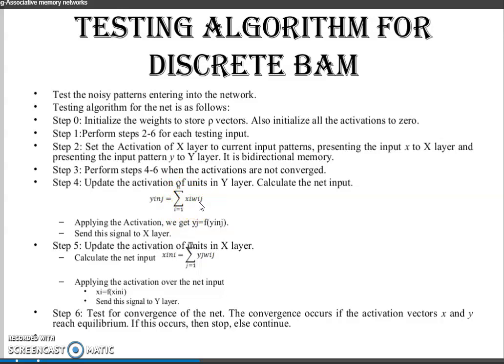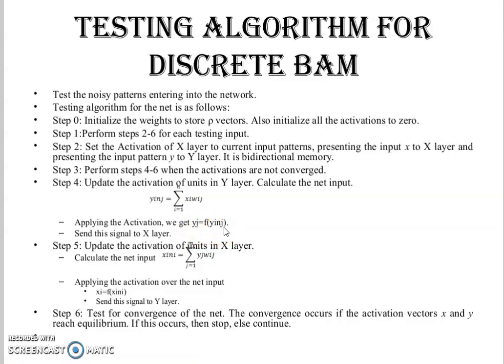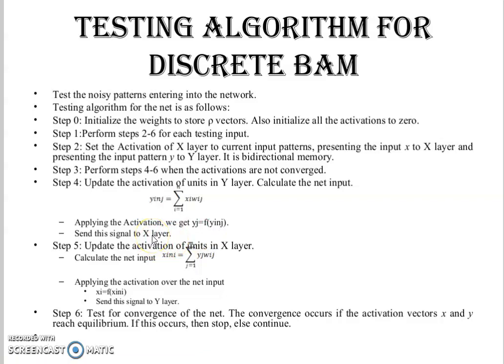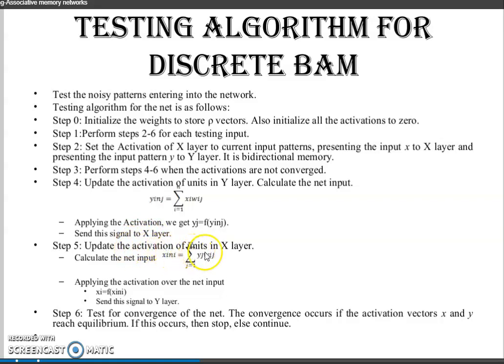We activate the units in the Y layer, then apply the activation function. We get f of y_inj. Then we activate the units in the X layer and send this signal back to the X layer. Update the activation of units in the X layer.